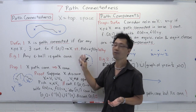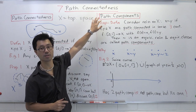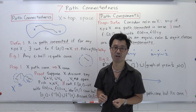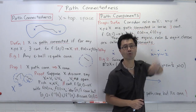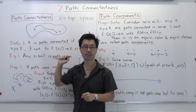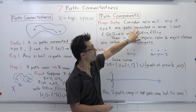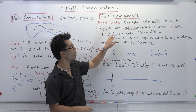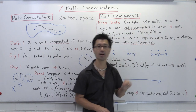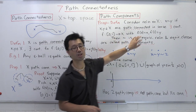Next I want to talk about the reverse implication, but to do so I need to introduce an important new notion: path components. We'll consider a relation on our topological space X. When do we say x is related to y? We'll say x is related to y — and the terminology is that x and y are path connected — if there exists a continuous function f from [0,1] to X such that f(0) = x and f(1) = y. The proposition is that this relation is actually an equivalence relation, and the equivalence classes we call path components.